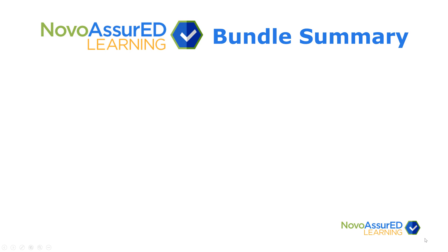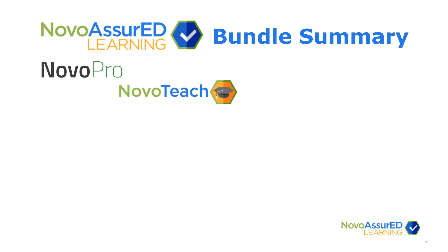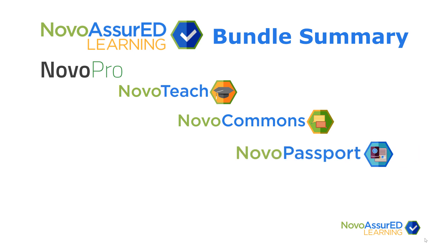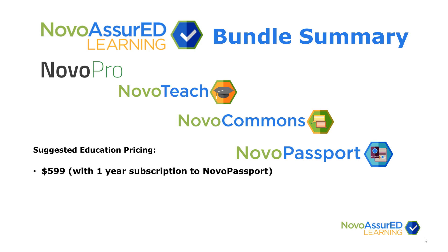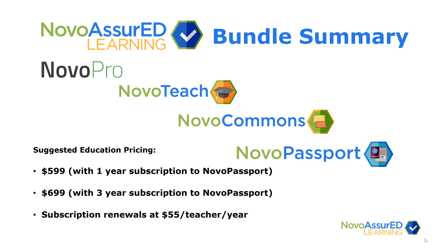In summary, the NovoAssured Learning bundle consists of four main components: the NovoPro hardware, the NovoTeach software, NovoCommons online community, as well as the NovoPassport professional development environment. The suggested educational pricing for the NovoAssured bundle, which includes the hardware as well as all of the components mentioned, is $599 with a one-year subscription to NovoPassport, or $699 with a three-year subscription to NovoPassport. In both situations, you still keep the hardware and access to the commons and the software. It's only the NovoPassport that expires after the subscription term. However, subscription renewals are available at $55 per teacher per year on an ongoing basis after that.